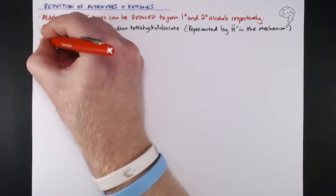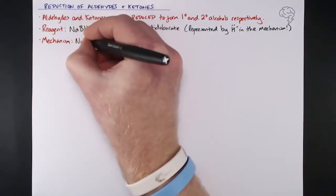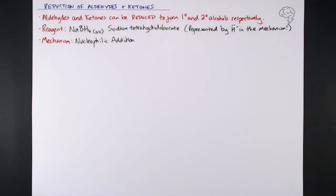Yes, I did use the M word - we do need to know the mechanism for this. The mechanism for this reduction is known as a nucleophilic addition mechanism. We've got a nucleophile, our H minus, and we're adding hydrogen into these molecules because we're reversing the oxidation.